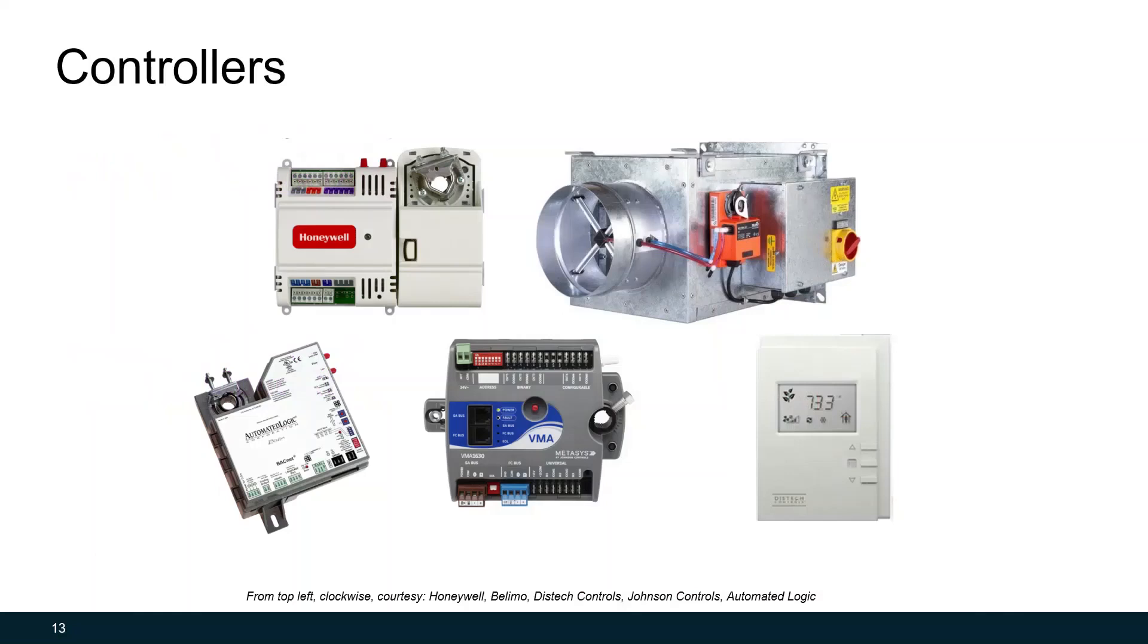Here's a picture of some more controllers. In the top right of your screen, you'll see an air terminal box, commonly seen in variable air volume systems. What's important to note here is that it comes with a pre-packaged controller. When you're specifying equipment, make sure that you know whether or not it comes with its own controller. If it doesn't come with its own controller, you might need to specify a separate controller from the controls contractor to go with it. In the bottom right, you'll see a thermostat, which is also a sensor, but does include a controller. In your home air conditioning system, the thermostat is the controller that is sending an output signal to your furnace or air conditioning unit to turn on and off.